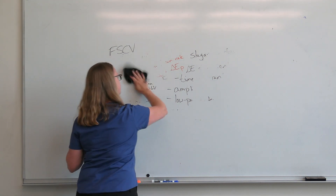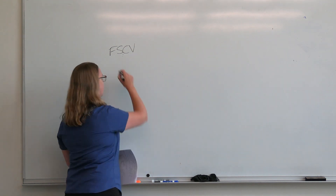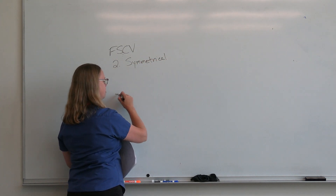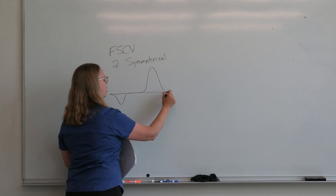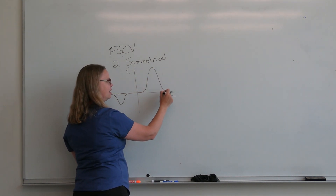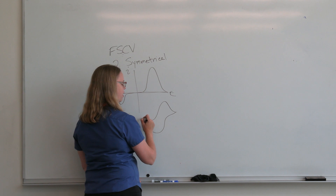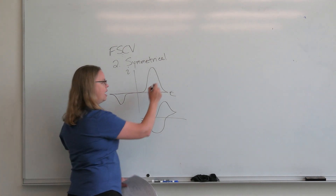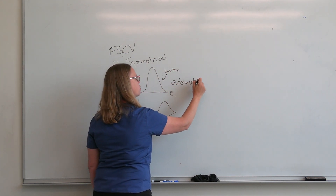Let's look at something else for peak shape: the peaks are symmetrical — they come back down to baseline. A typical diffusion-controlled CV looks like this: it stays up above baseline. Ours do not stay up. The fact that our peaks return to baseline basically tells us that we're adsorption controlled.